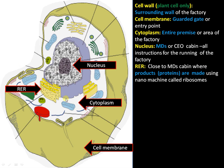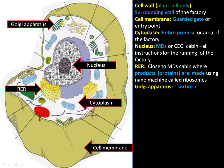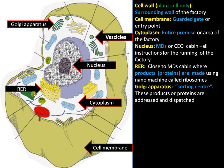Next comes the Golgi apparatus, which is a sorting center of the cell. Once the products are made, they should be dispatched to the correct locations — this addressing process takes place in the Golgi apparatus. Vesicles pinched off from the Golgi apparatus can be compared to packets containing products that have been properly addressed.